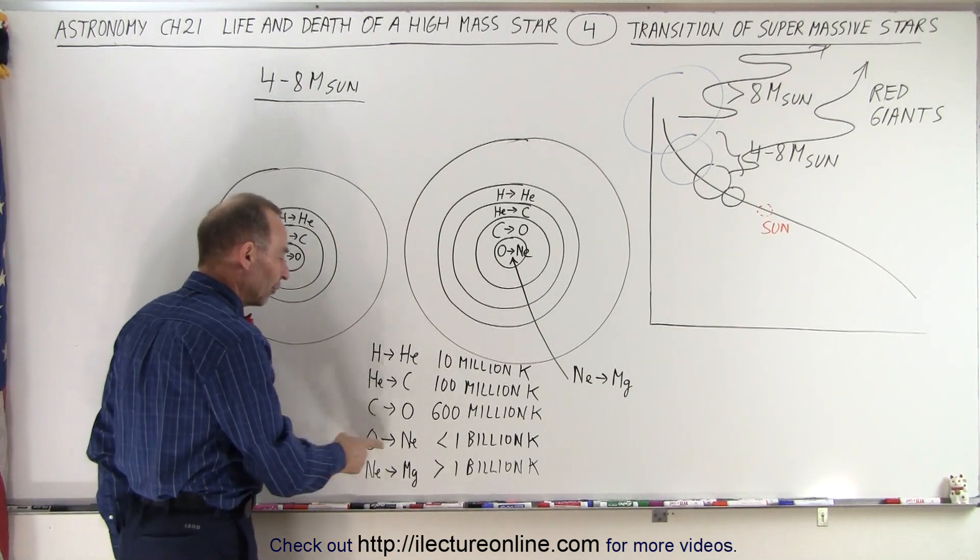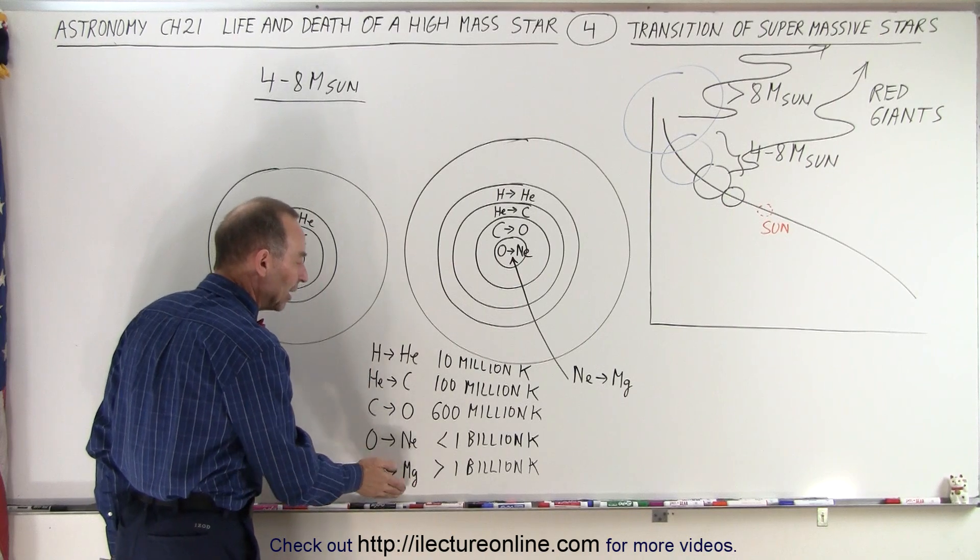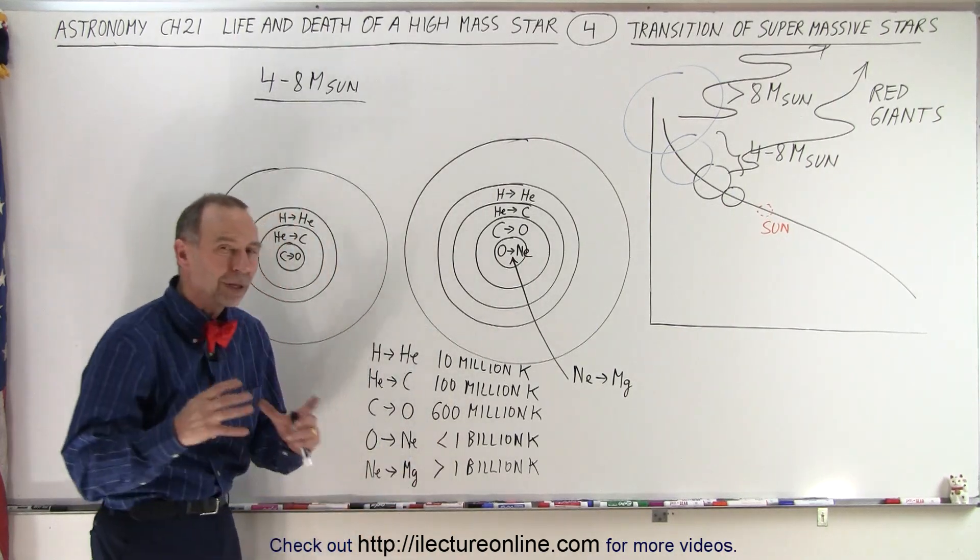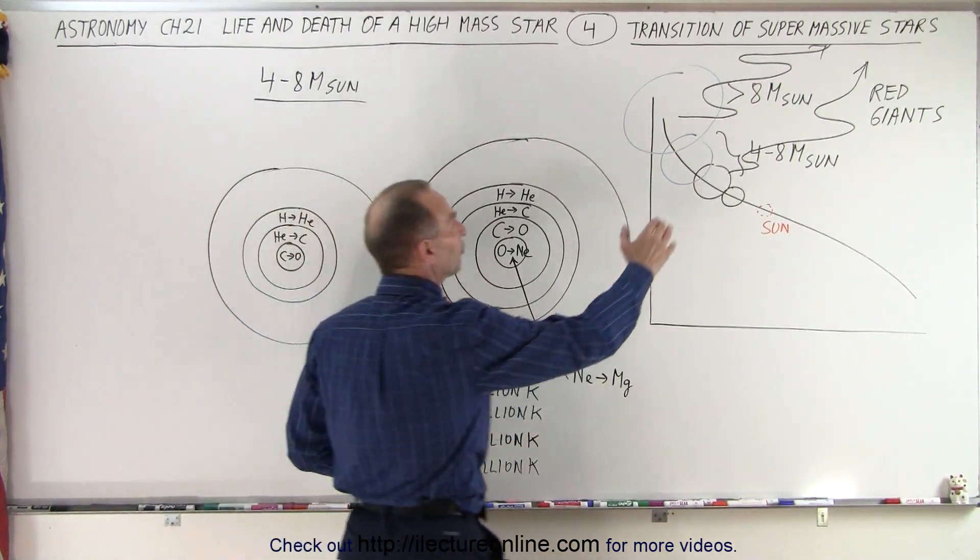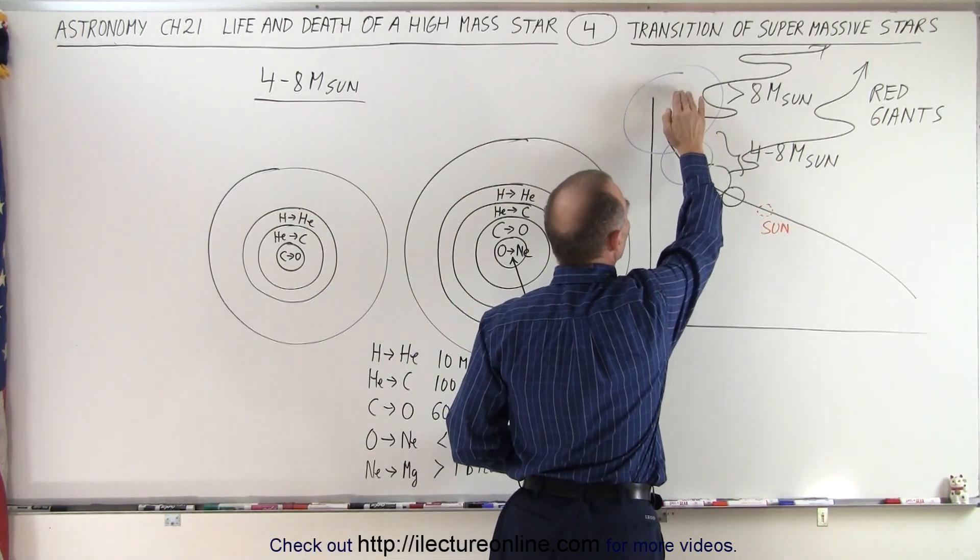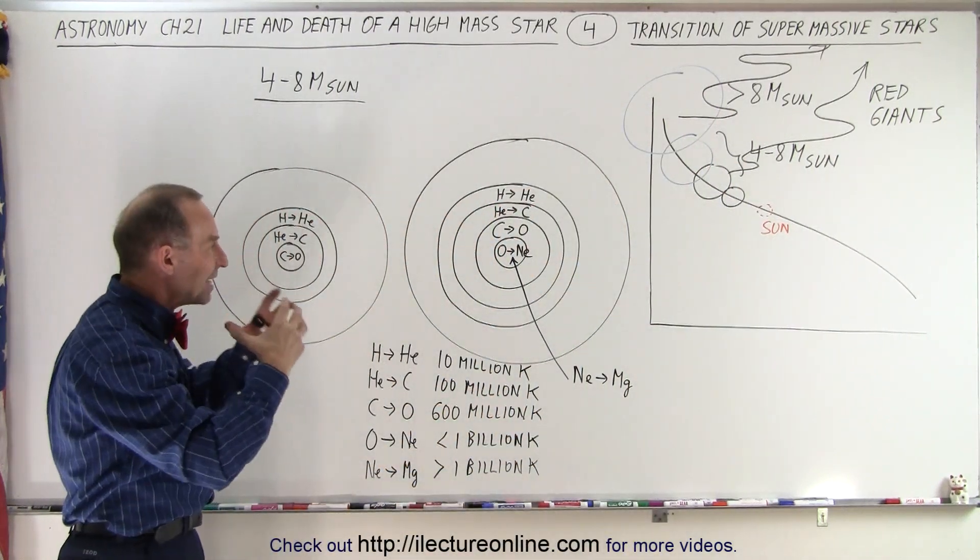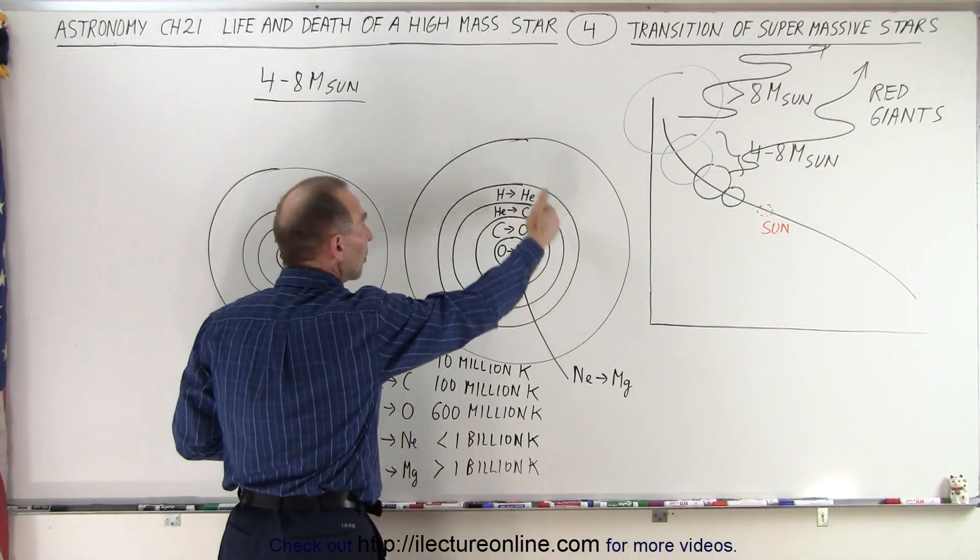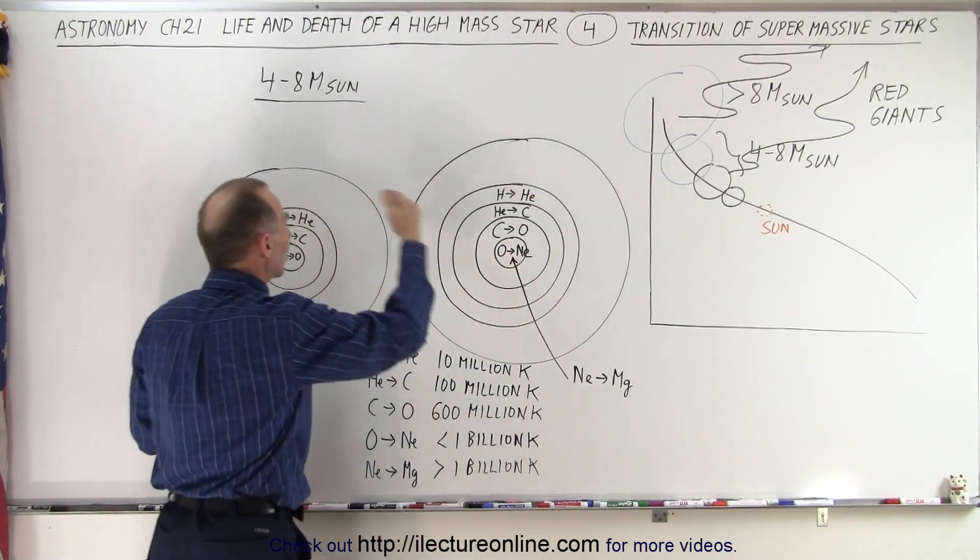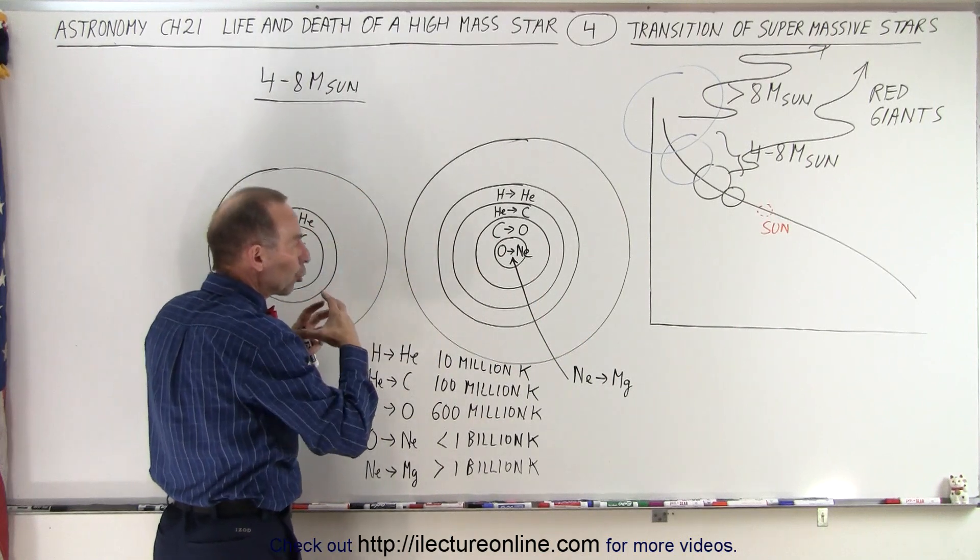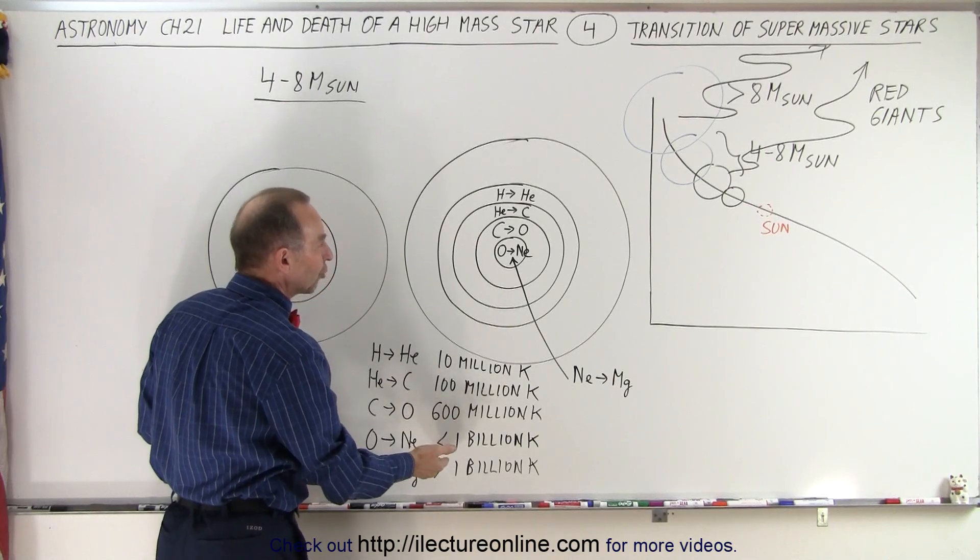By the time oxygen converts to neon, you need temperatures upwards of a billion degrees, and to convert neon into magnesium, you need temperatures over 1 billion degrees in the core. These large stars from 4 to 8 times the mass of the sun, and even larger, greater than 8 times the mass of the sun, they build up so much heat at the core from the ensuing next nuclear fusion process, which generates much more energy than converting hydrogen into helium. The core continues to increase in temperature, such that at the very center of the core, these higher temperatures are reached.